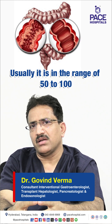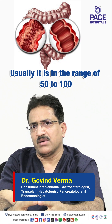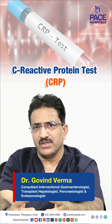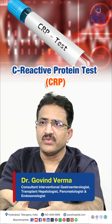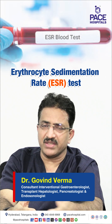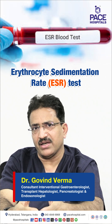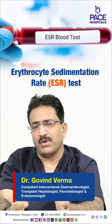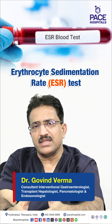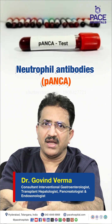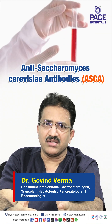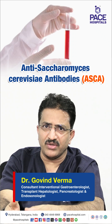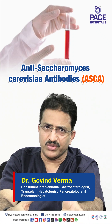So fecal calprotectin is a very important marker. The other tests we do in the blood are C-reactive protein and ESR — if elevated, these again suggest a chronic disease. Apart from this, we can also do P-ANCA and ASCA, because these blood tests can help determine whether it is ulcerative colitis or Crohn's disease.